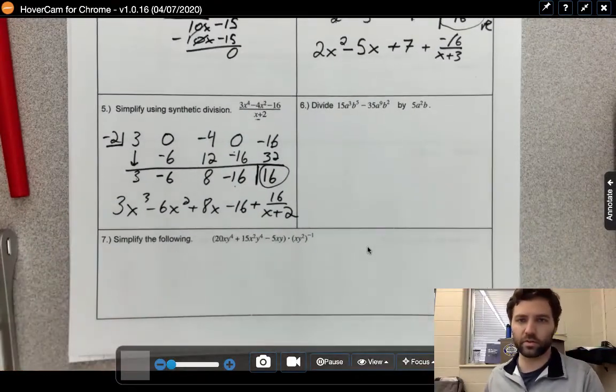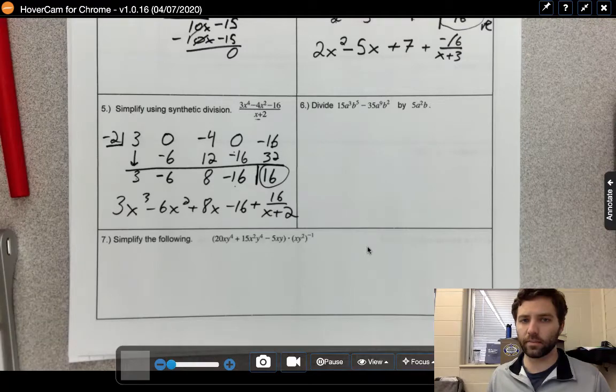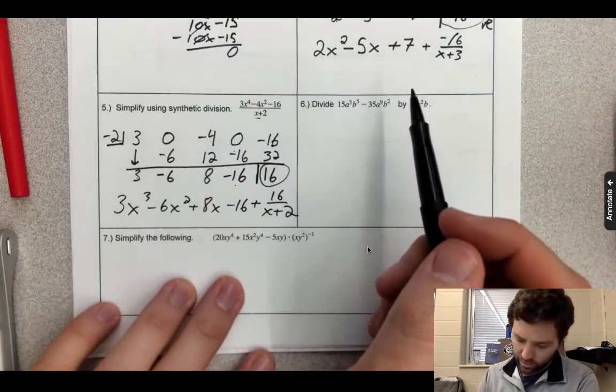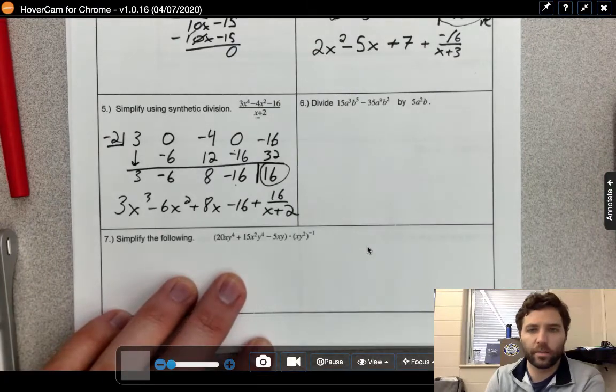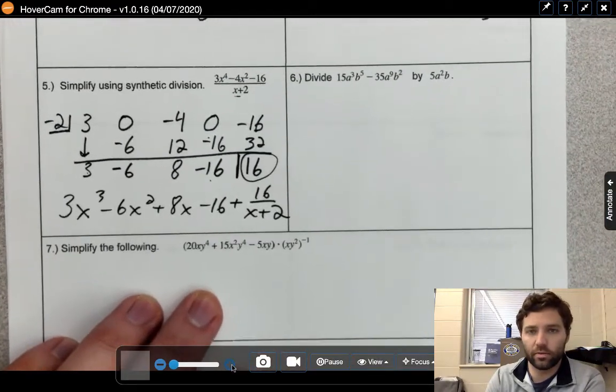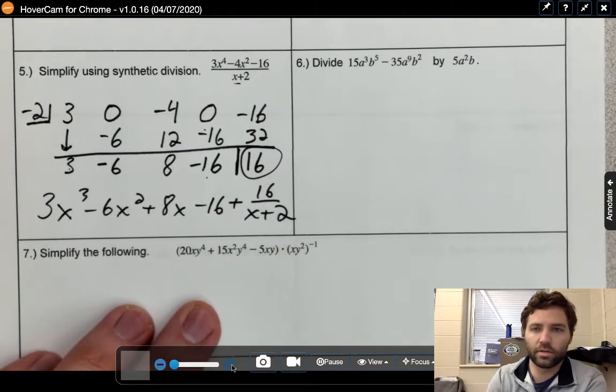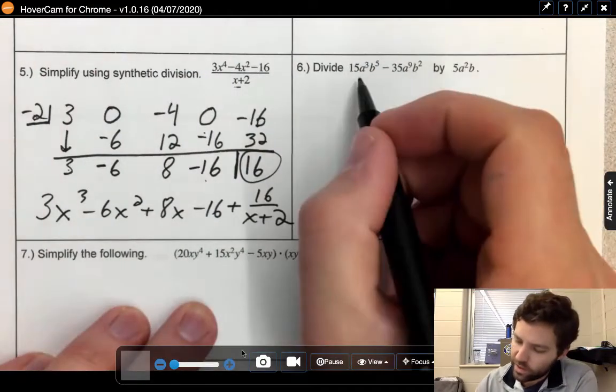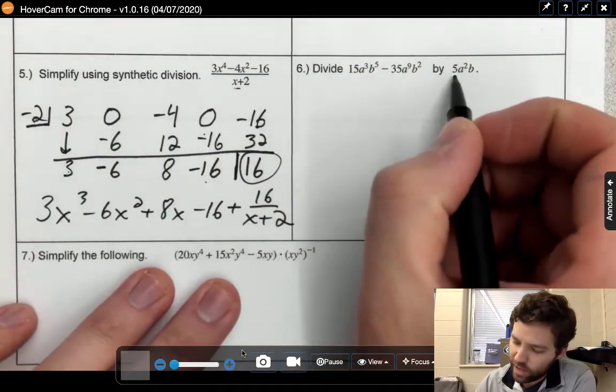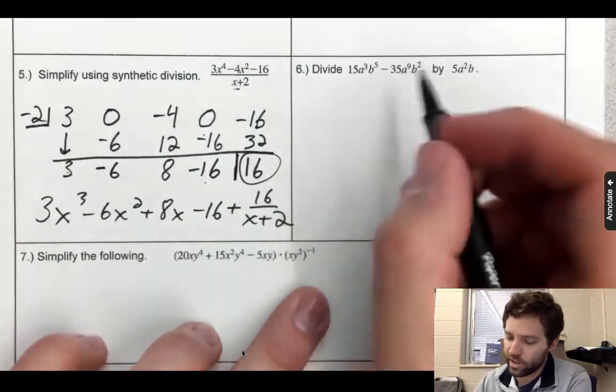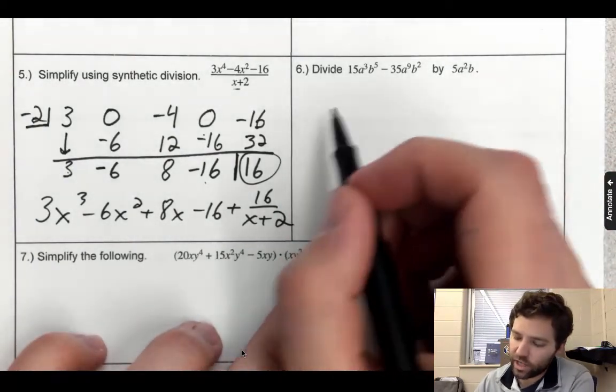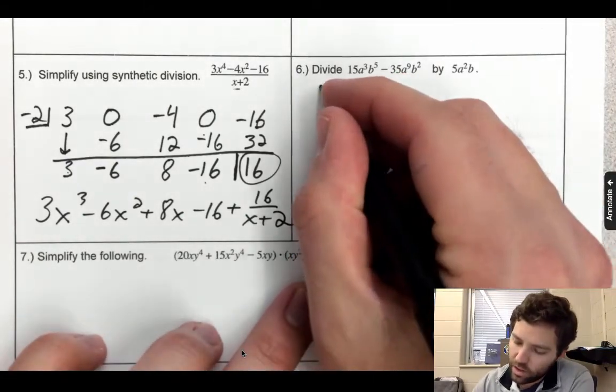Okay, last couple problems with the notes here. We're going to take some more complicated polynomials with multiple variables and do some division. We're going to take this expression and divide it by 5a²b. You can do long division with this, but honestly I think it's easier to set it up as a fraction and then divide accordingly. I'll show you what I mean by that.